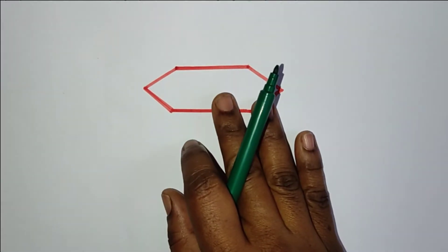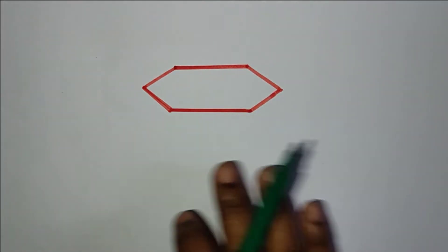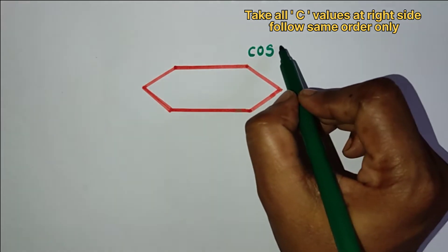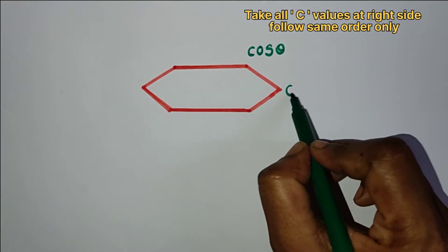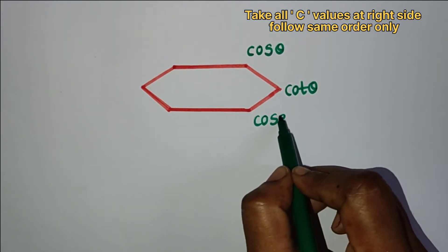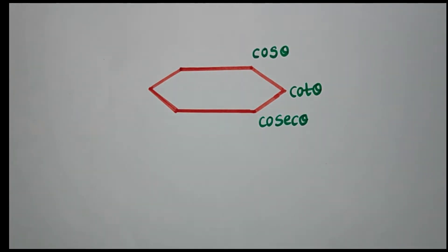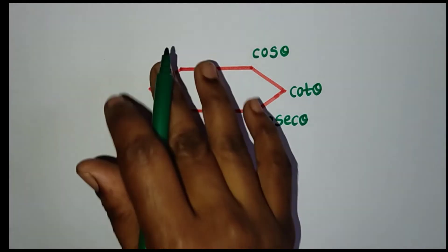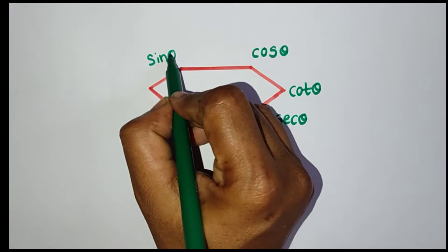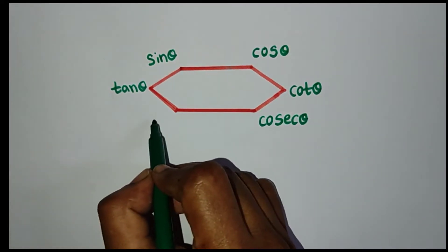This is the hexagon. Now write the trigonometry values in this order: cos theta, cot theta, cosecant theta, sin theta, tan theta, secant theta.